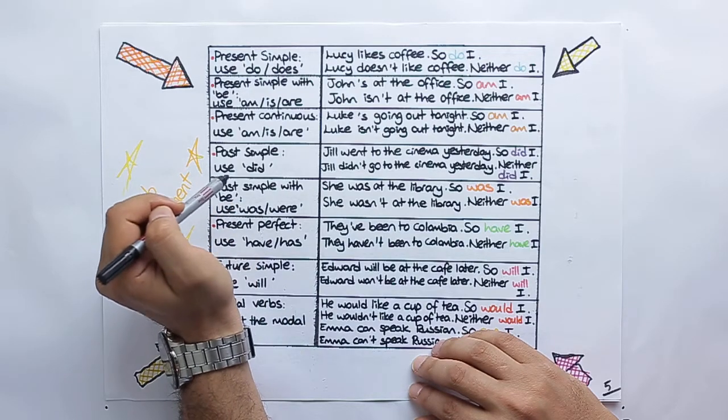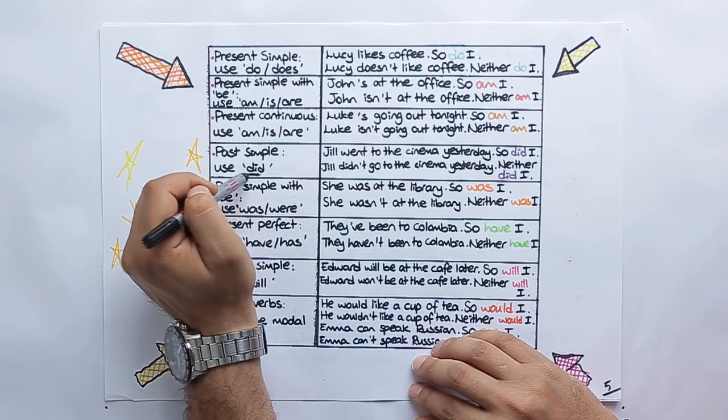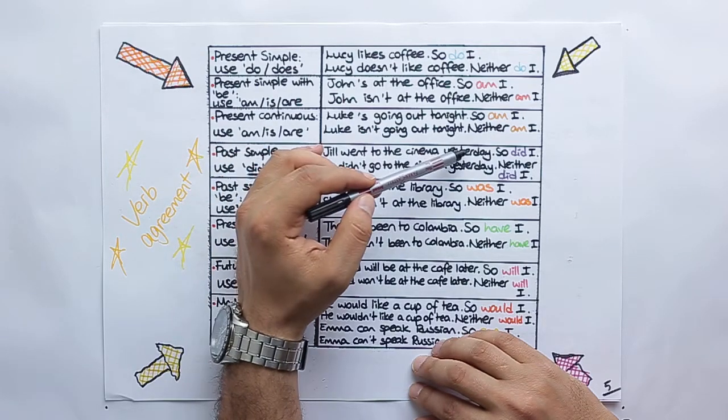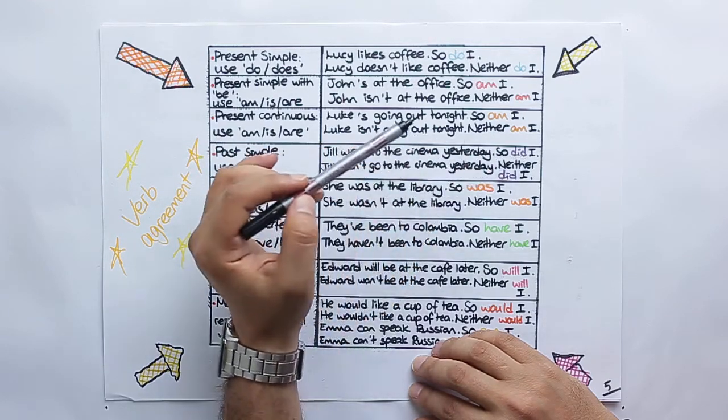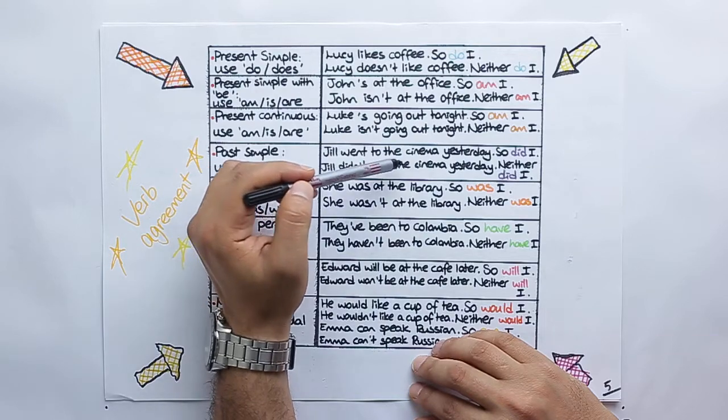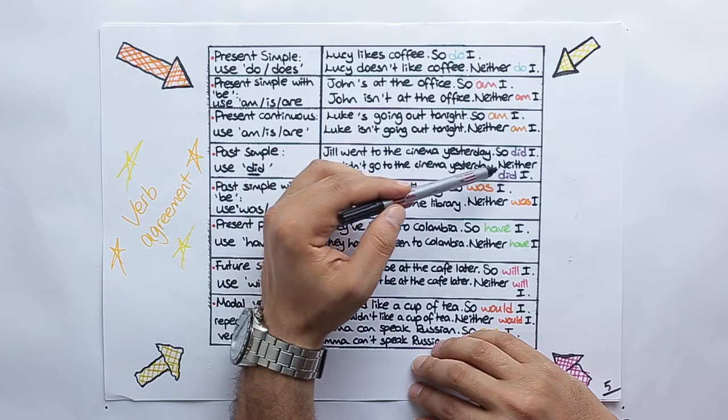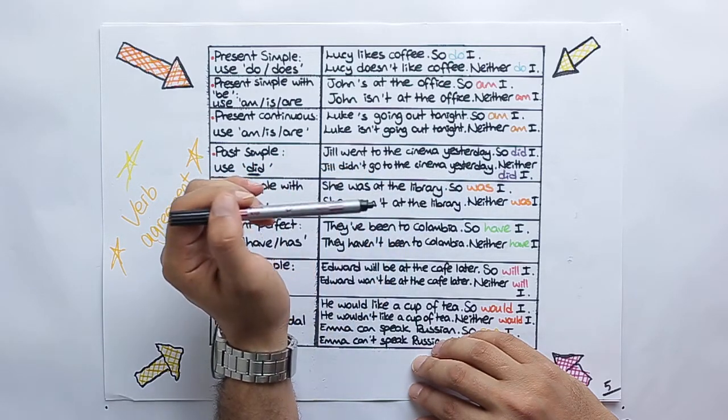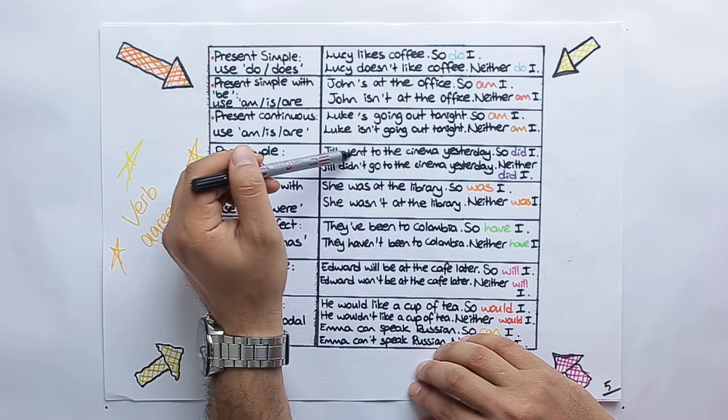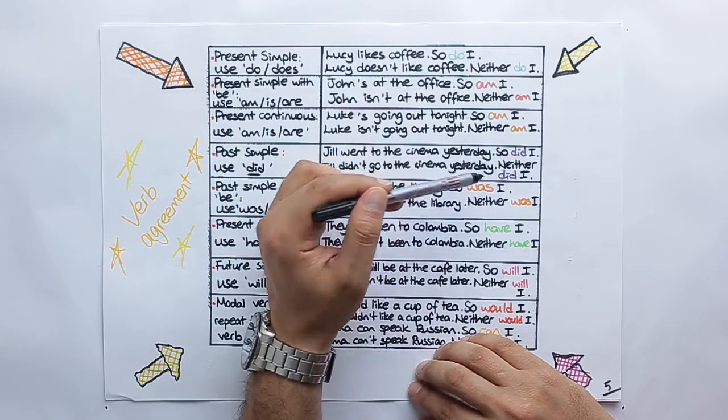For past simple, you use did here. Jill went to the cinema yesterday, so did I. Jill didn't go to the cinema yesterday, neither did I. Don't forget it. For affirmative forms, so. For negative forms, neither.